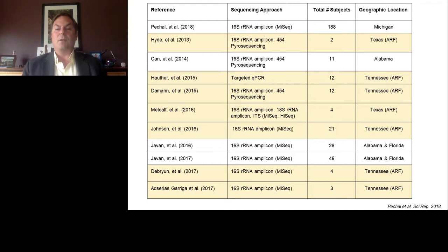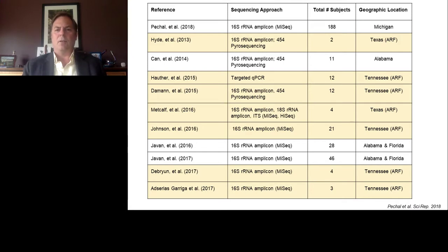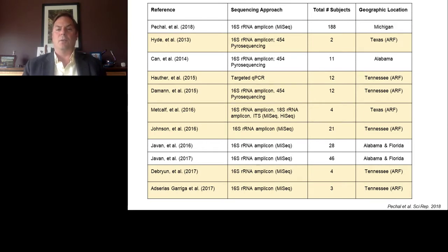There have been many other studies in the past several years. Looking at the total number of subjects in this table, most studies between two and twenty subjects are at anthropological research facilities. Those with 28, 46, and 188 subjects are from cases during death investigation.